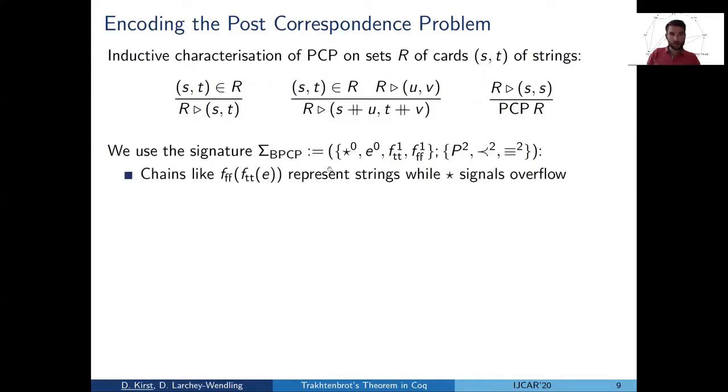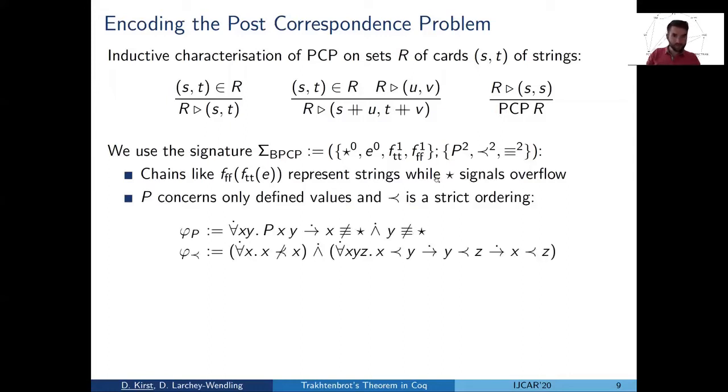Strings are represented as application chains. This example here would encode the string false true. And the additional constant star signals overflow because we're concerned with finite approximations of solutions.